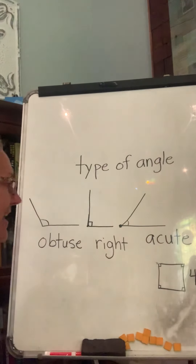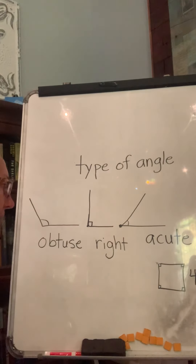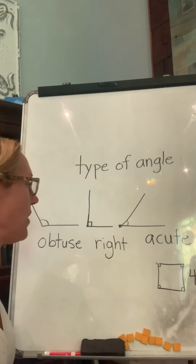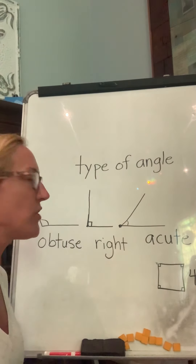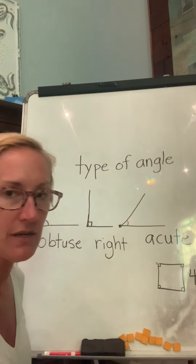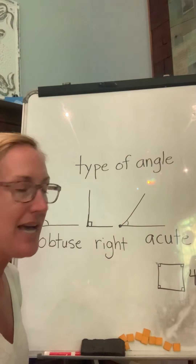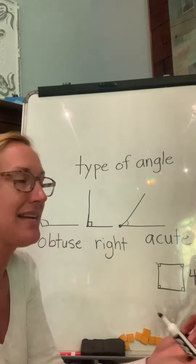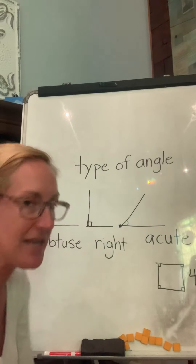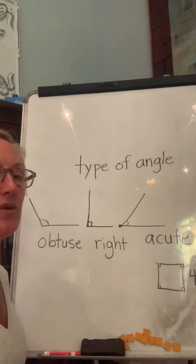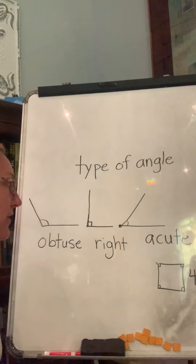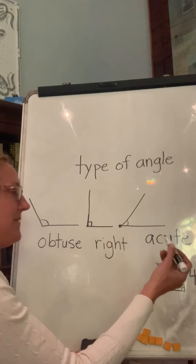When we're talking about angles, we don't use inches — that's how long something is — and we're not going to use pounds or ounces, that's how heavy something is. For angles we use degrees, kind of like with temperature, but it's a different kind of degree.